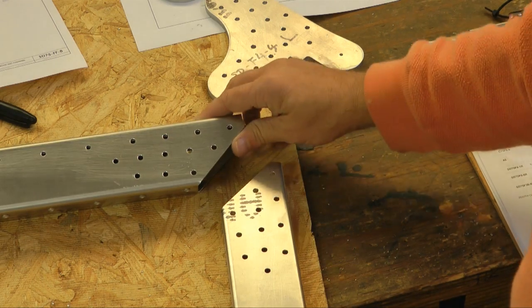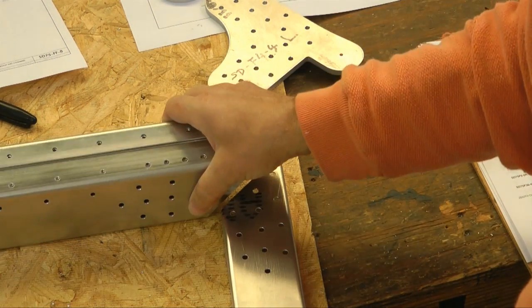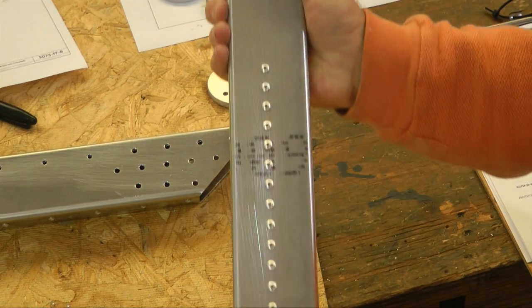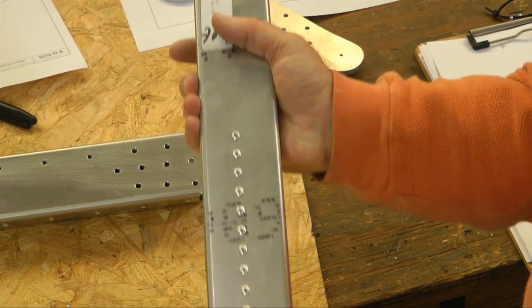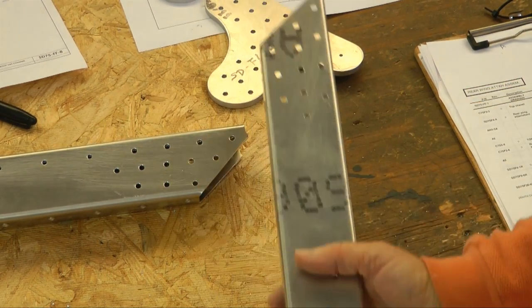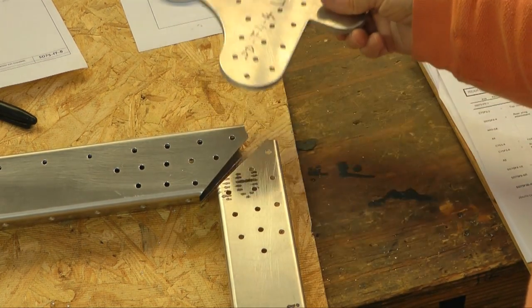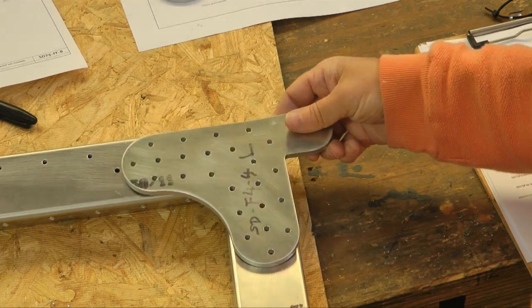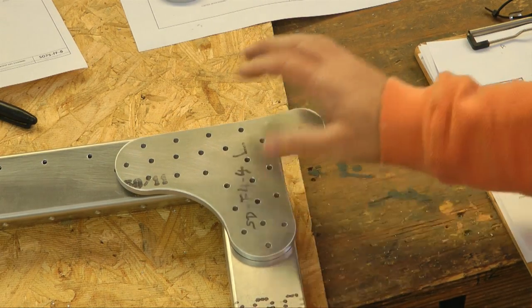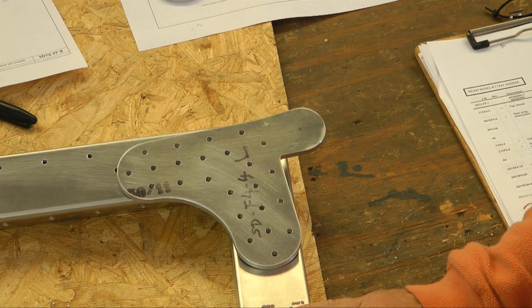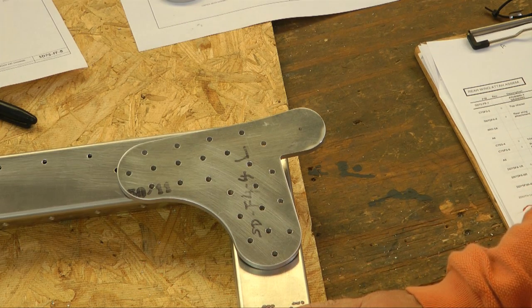Now we're going to join the top part that we previously riveted with the component that we just finished. And they will join at a 45 degree angle. And then we take our wing ear and match up all the holes. We'll Cleco this in place. Do the same for the other side. And then we're really ready to go.